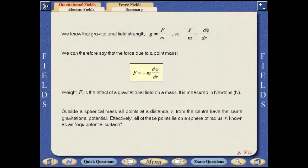Outside a spherical mass, all points at distance r from the centre have the same gravitational potential. Effectively, all of these points lie on a sphere of radius r, known as an equipotential surface.